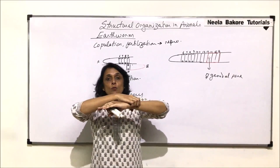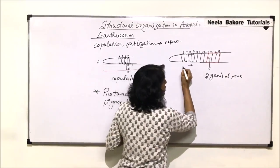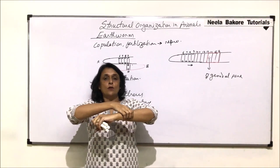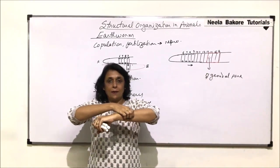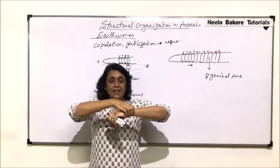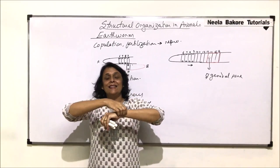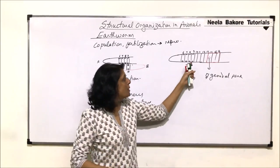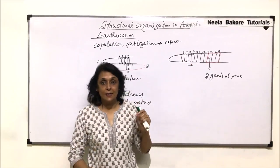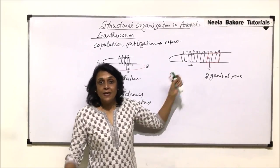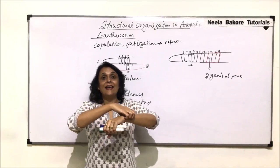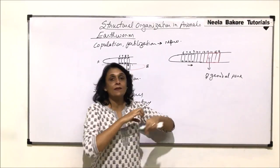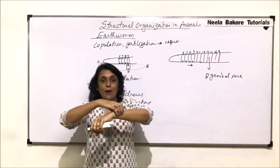The eggs are now in the space between the clitellum and the skin. The worm then withdraws from the clitellum — it moves backwards. The clitellum, currently on the 14th segment, moves over the 9th, 8th, 7th, and 6th segments. When it passes over those segments where the spermathecal pores are located, the sperms are released — the sperms of worm B.